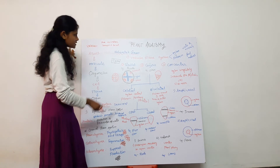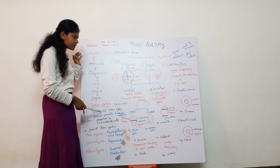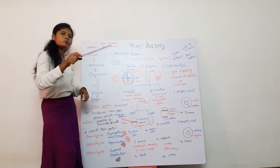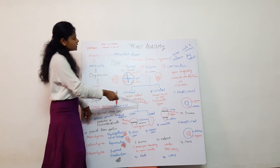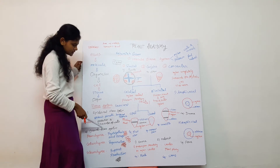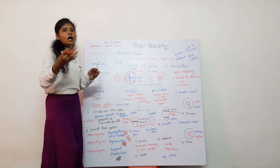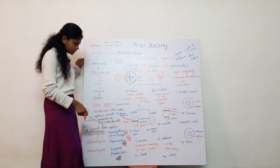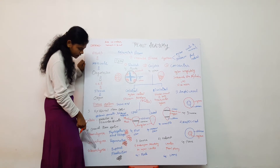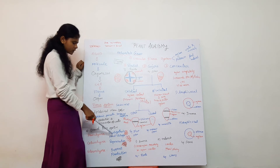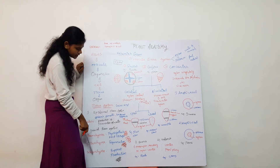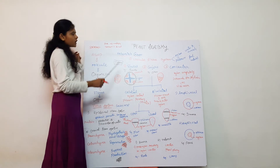To summarize: the epidermal tissue system is the outermost layer. The ground tissue system lies between the epidermis and vascular tissue system — it includes cortex, pericycle, and pith. The ground tissue system has three types: parenchyma, collenchyma, and sclerenchyma. Parenchyma function is photosynthesis and food storage; collenchyma function is regeneration; sclerenchyma is for support and protection.